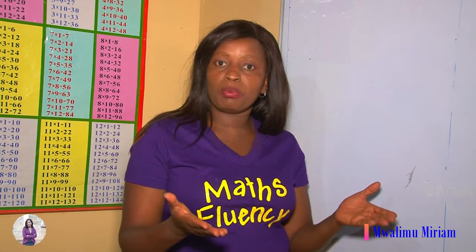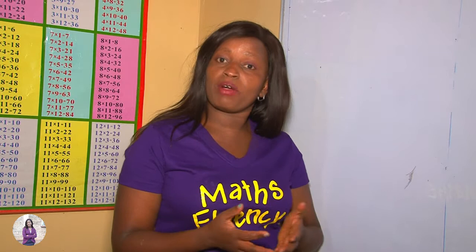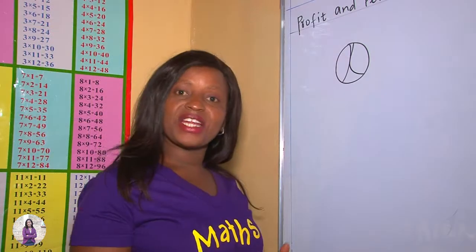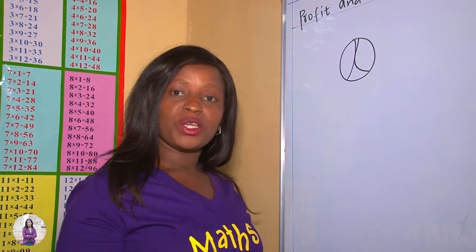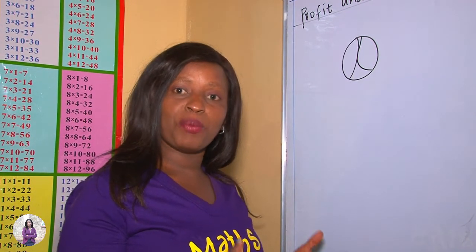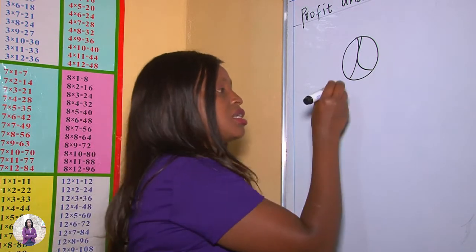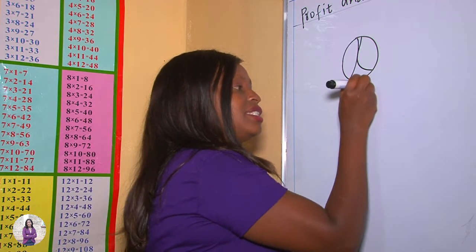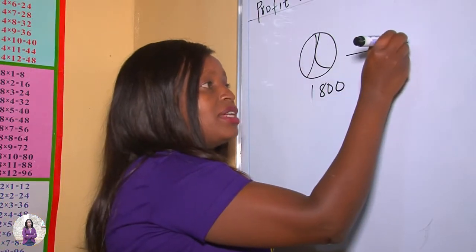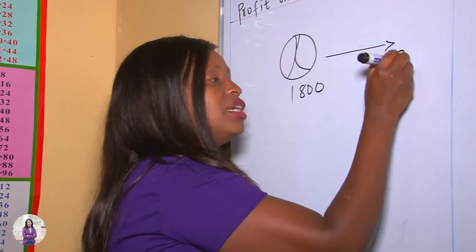So what is profit? Profit is the extra money that you make out of a business or out of a transaction. For instance, let's say that you go to the sports house to purchase a ball and you find that the price of the ball is $1,800. You sell it to your friends at $2,500.